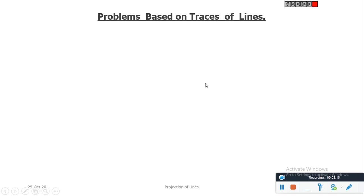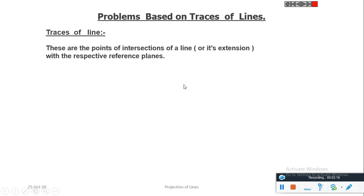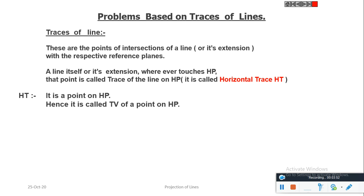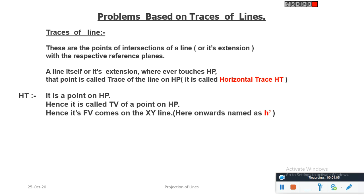Next we move on to problems based on traces of lines. First of all, let us understand what traces are. These are the points of intersection of a line or its extension with the respective reference planes. A line itself or its extension, wherever it touches HP, that point is called the trace of the line on HP, or it is simply called the horizontal trace. So HT is a point on HP. Hence, it is the top view of a point on HP, and its front view comes on the XY line. It is named as H'.